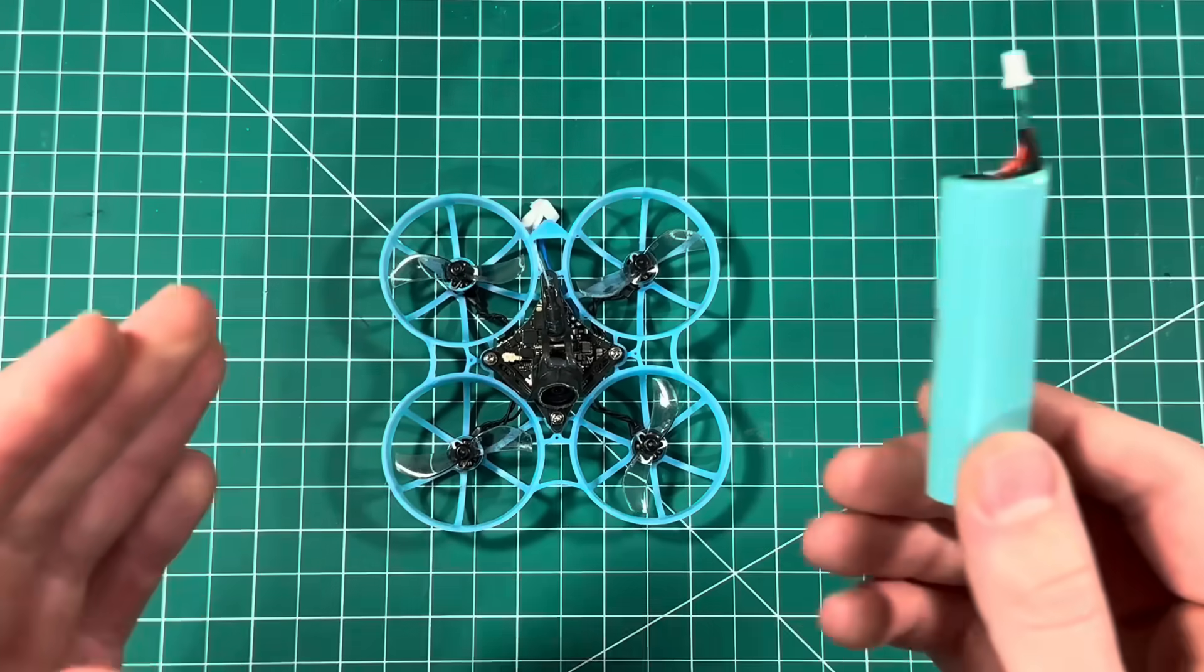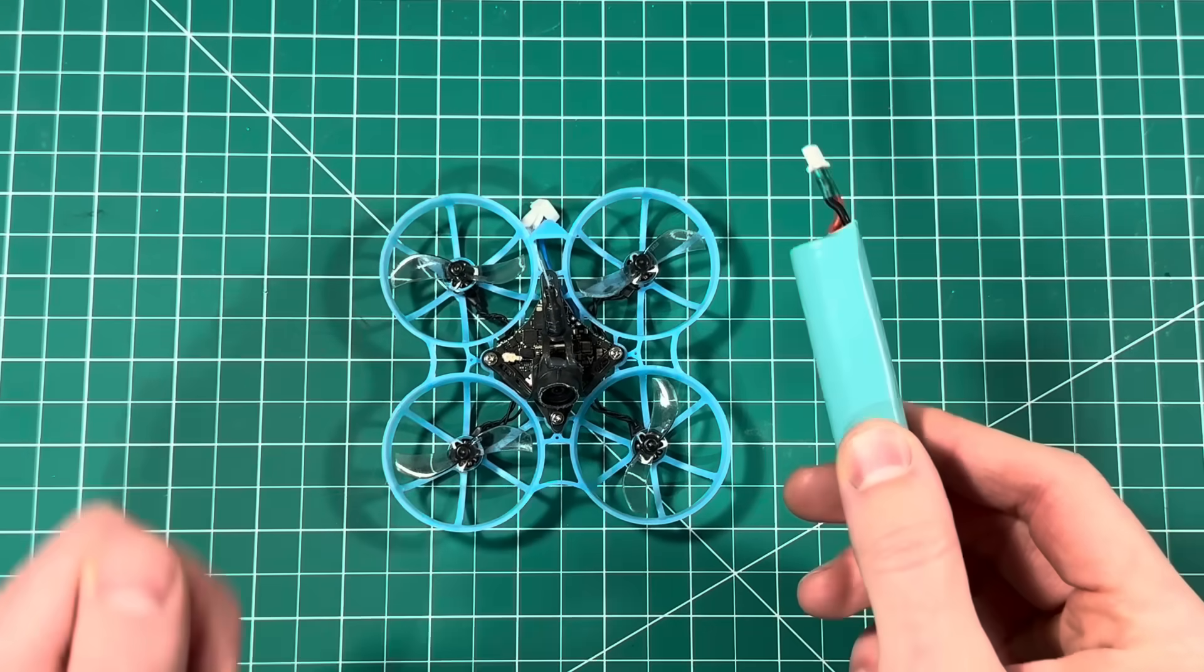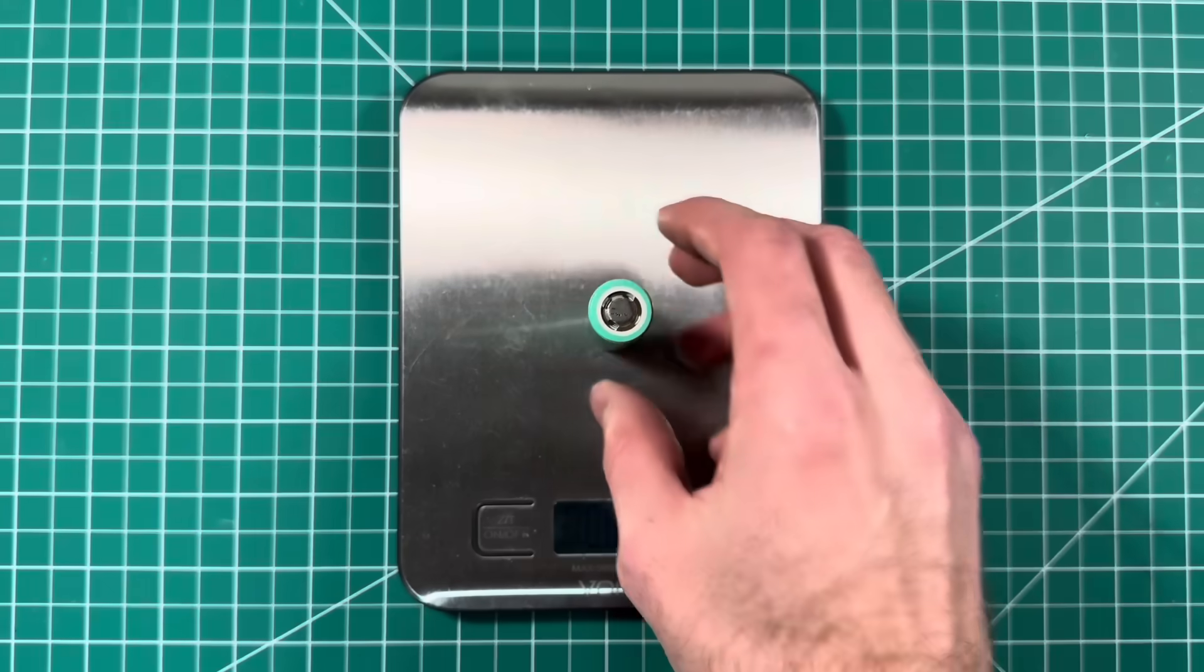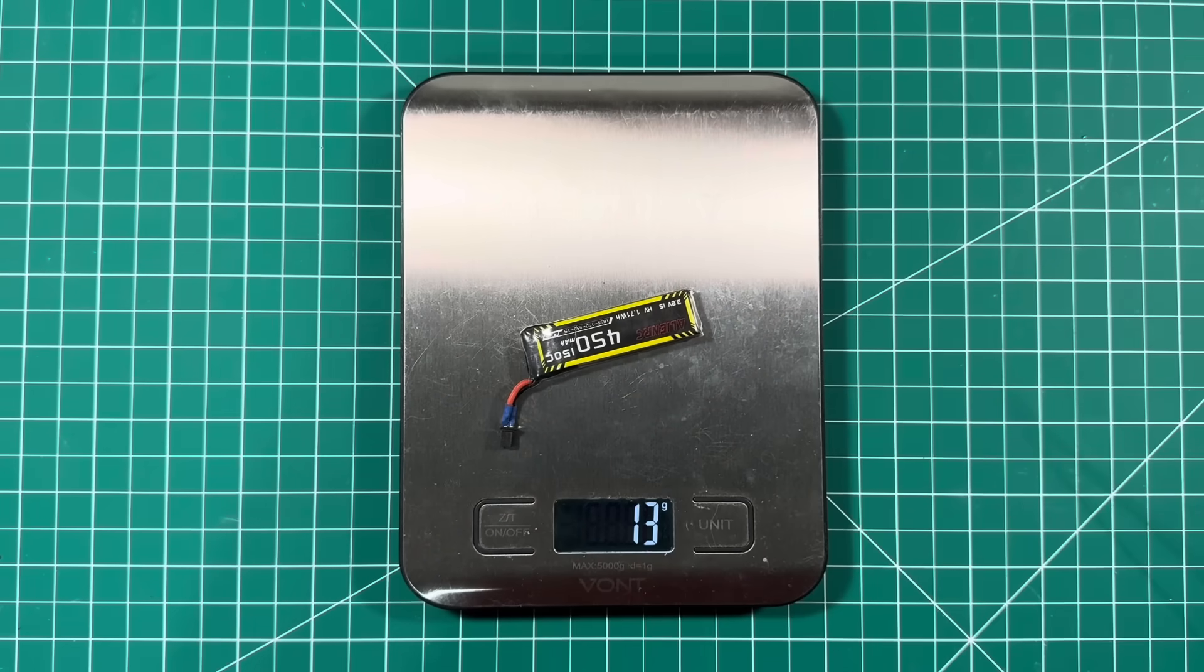Some of you may be thinking that a lithium ion cell is not going to work very well with a Tiny Whoop. Well, you're partially correct. An 18650 weighs about three and a half times more than the LiPo and Tiny Whoops just aren't designed for that much weight.